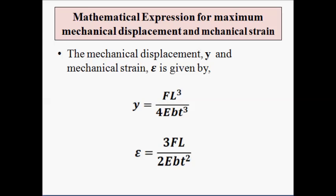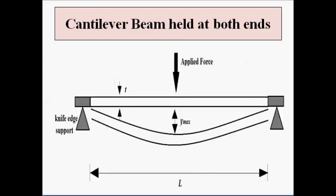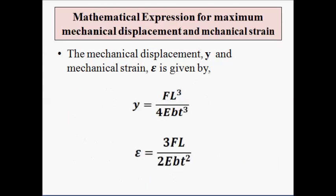We have discussed the cantilever beam for measurement of force or weight in both configurations — the beam held at one end, and the beam held at both ends. In both cases, there is a direct relationship between the displacement produced and the force applied, and between the mechanical strain induced in the beam and the applied force. This can be used to construct a graduated and calibrated scale so that we get an output in terms of force values directly related to either mechanical displacement or strain.